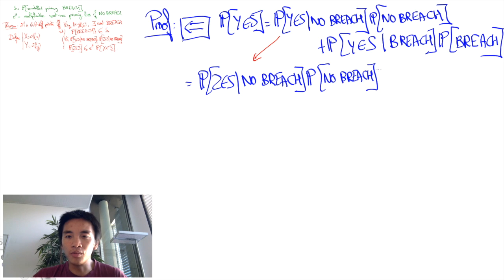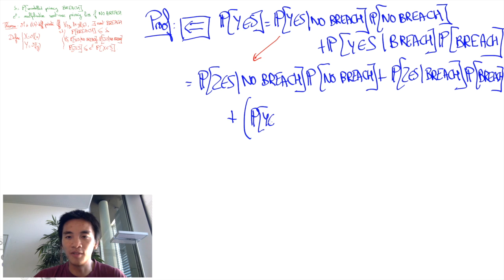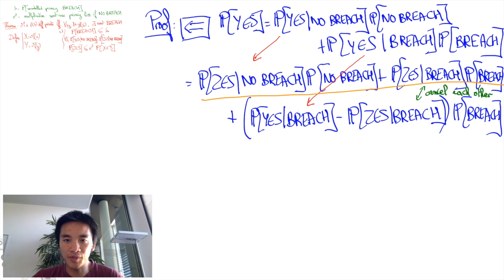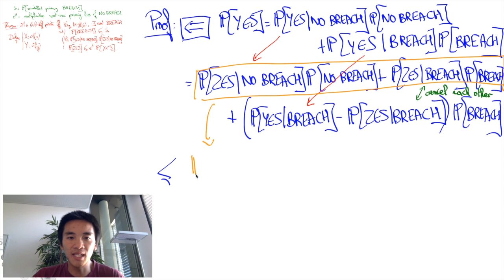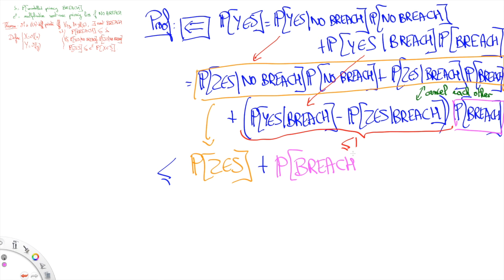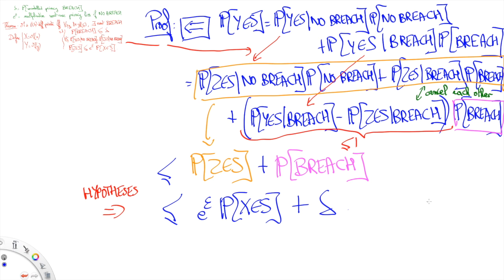For the other terms, we add the probability of Z in S given that there is a breach times the probability of a breach, plus the quantity necessary to make sure it equals the value above. If we recombine the first terms, we obtain the probability that Z is in S. The remainder — the probability of Y in S given breach minus the probability of Z in S given breach — is at most 1, and the probability of a breach is at most delta. Finally, using the other inequality from the right-hand side, this is at most e to the epsilon times the probability that X is in S, plus delta.